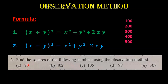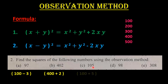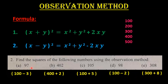We split each number as follows: 97 = 100 − 3, 402 = 400 + 2, 105 = 100 + 5, 98 = 100 − 2, and 308 = 300 + 8. If there is a minus sign we use formula two, and if there is a plus sign we use formula one.